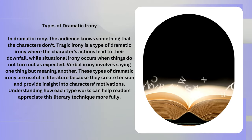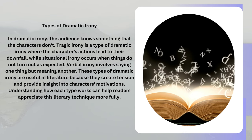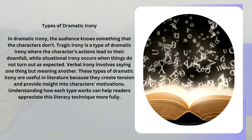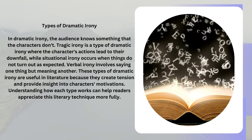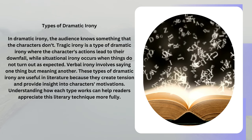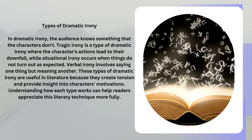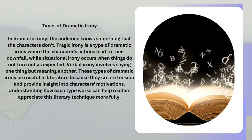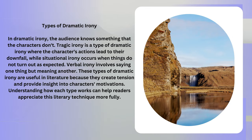In dramatic irony, the audience knows something that the characters don't. Tragic irony is a type of dramatic irony where the character's actions lead to their downfall, while situational irony occurs when things do not turn out as expected. Verbal irony involves saying one thing but meaning another.